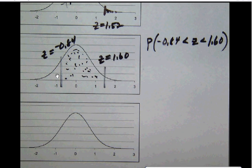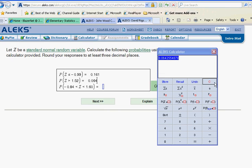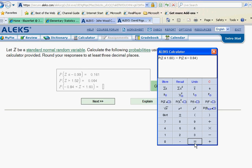So what we want to do then is to go back to our ALEKS calculator, clear it, take the P of Z button of the bigger value, the 1.60, and then subtract the P of Z button for the negative 0.84. And that will give us what we want here, which is going to be to three decimal places, 0.745.